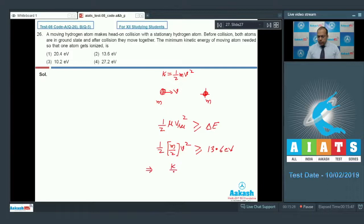we can say that the value of K by 2 is greater than or equal to 13.6 electron volt or the value of K is greater than or equal to 27.2 electron volt. So the minimum kinetic energy of the moving atom needed is 27.2 electron volt. So option 4 is the correct answer.